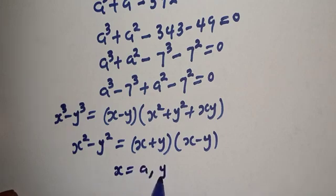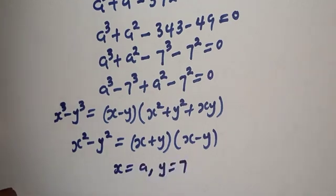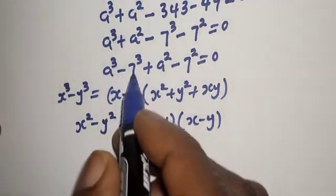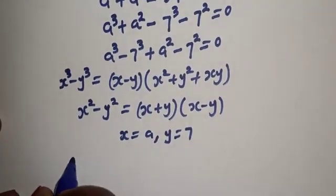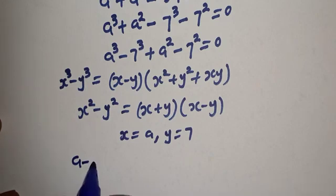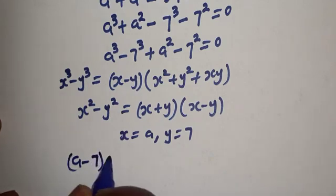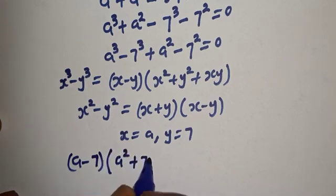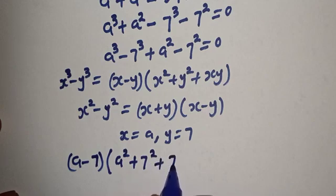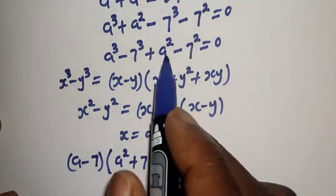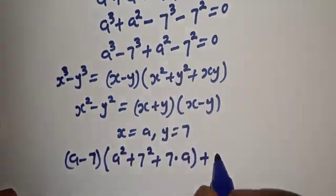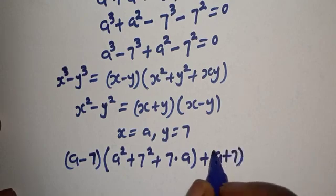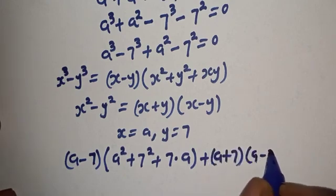In this case s is equal to a and y is equal to 7. So let's substitute. From the first term we have (a minus 7)(a squared plus 7 squared plus 7 multiplied by a).